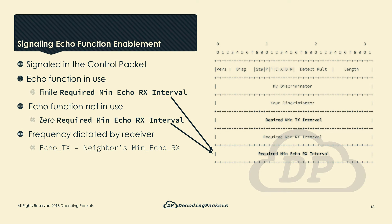There is also a need to somehow signal that the peer is interested in using the echo function. The control packet is used to indicate this, in addition to all of the other BFD variables. Specifically, the last field of the control packet — the required min echo RX interval — is leveraged for this purpose. In fact, it only exists for this purpose. If the echo function is in use or desired, this field will reflect a finite value in milliseconds. If not — if you don't want to use the echo function — the value is simply zero, meaning the neighbor is not interested.